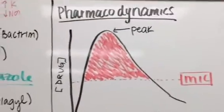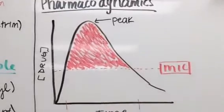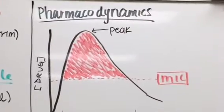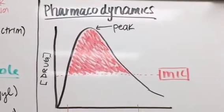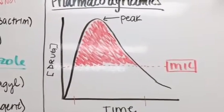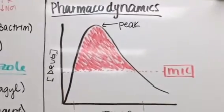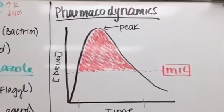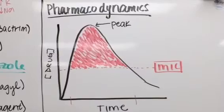Okay, so moving into our pharmacodynamics. We have something called pharmacokinetics which refers to our ADME: the absorption, distribution, metabolism, and excretion or elimination. So that's our ADME, and that's essentially what the drug is doing to the body.